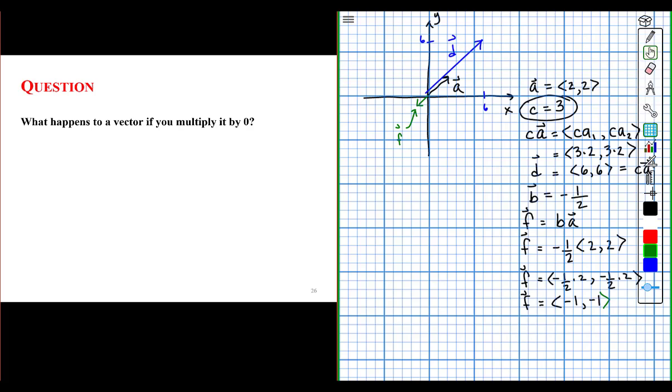So what do you think happens to a vector if you multiply it by zero? You've probably guessed it. It becomes the zero vector.